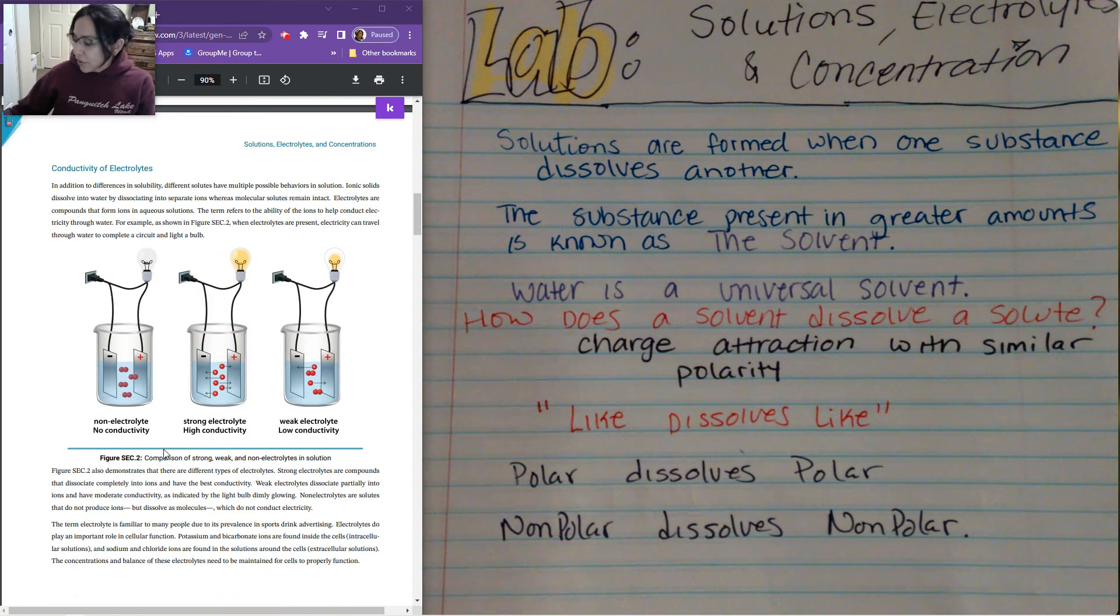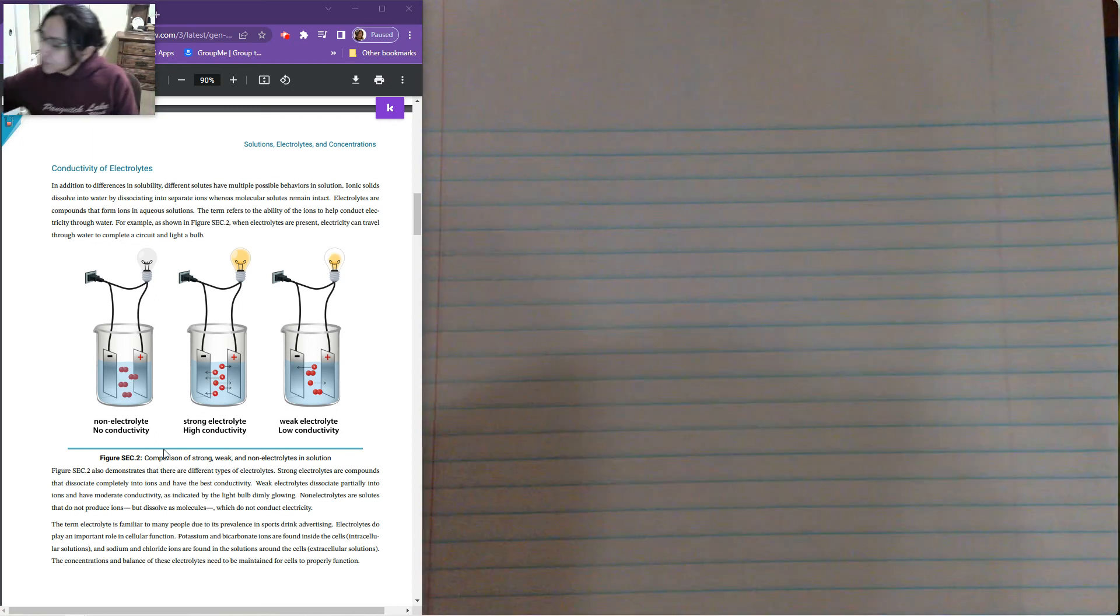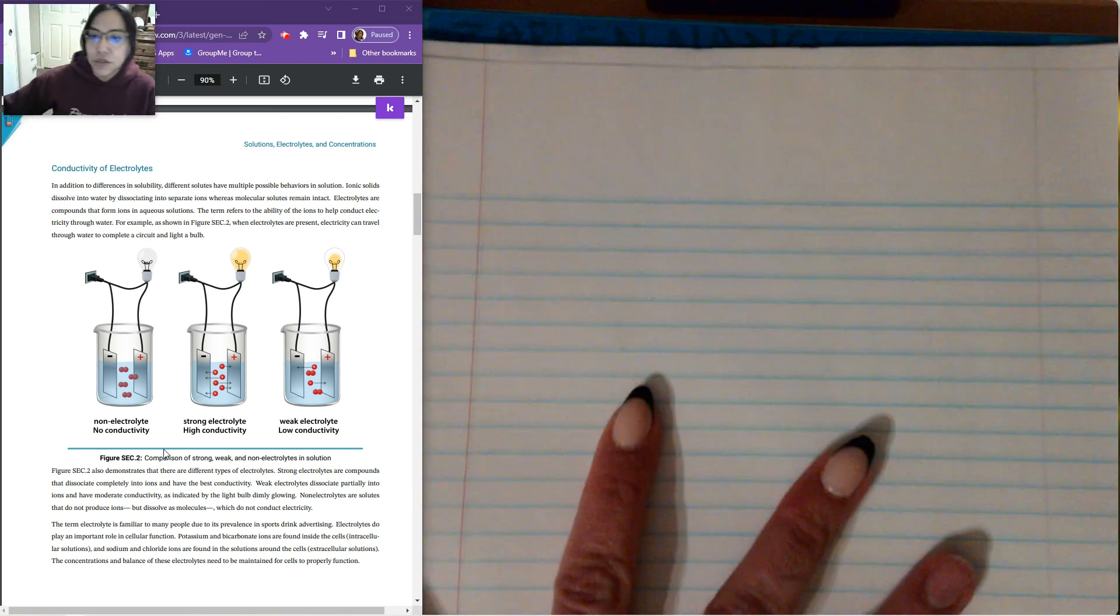So now that we've gone through polarity, let's go into electrolytes. Electrolytes is just the ability for your compound to create electricity. So if you have no electrolytes in your compounds, your nonpolar substance, you're going to have no conductivity. If you're strong electrolytes, then you're going to have a high conductivity. If you have weak electrolytes, then you're going to have a low conductivity. So let's talk about what it means to have a strong or a weak electrolyte.